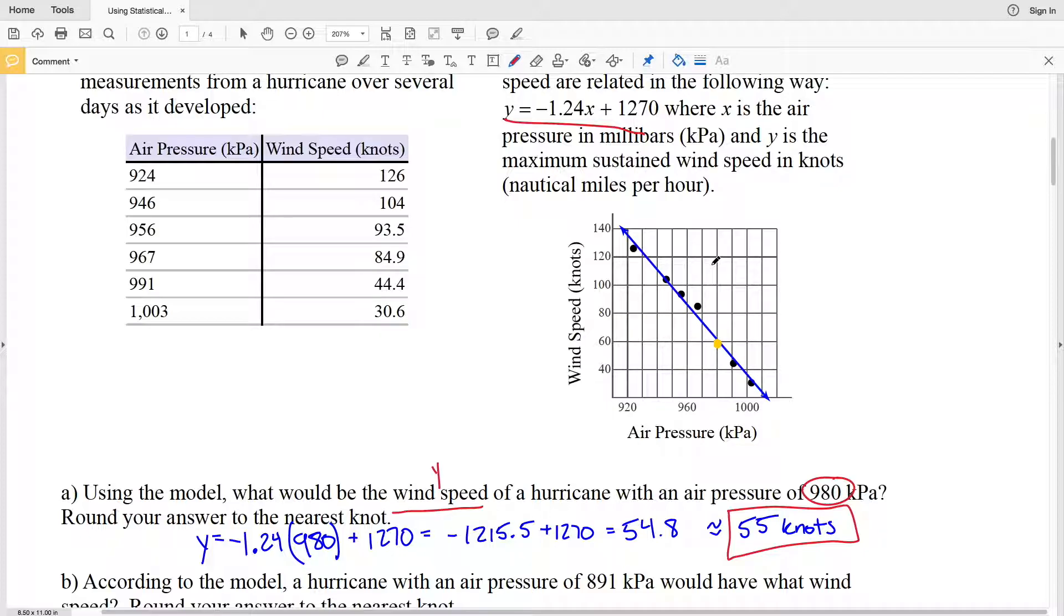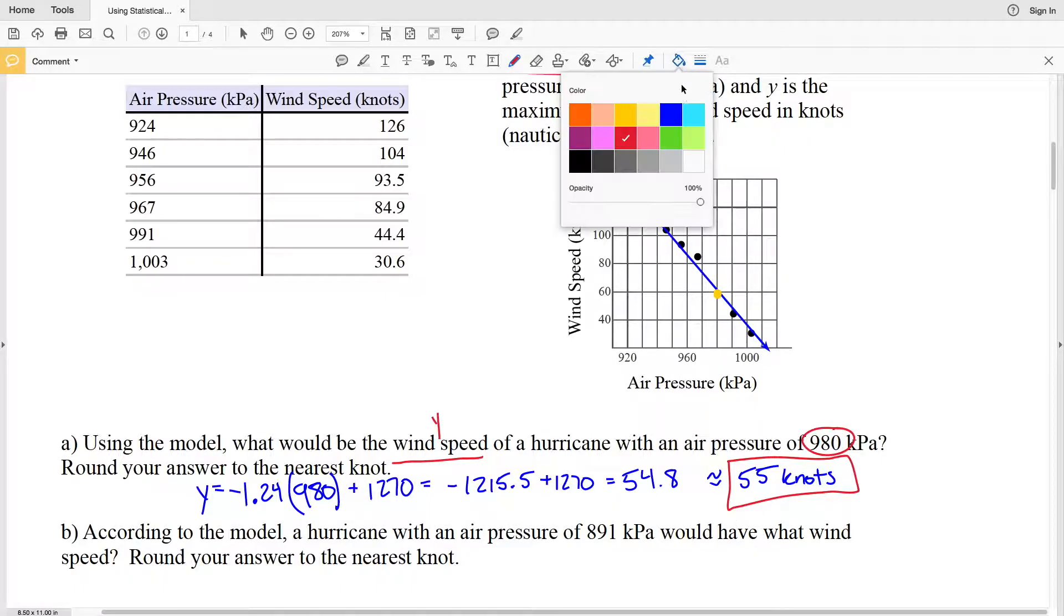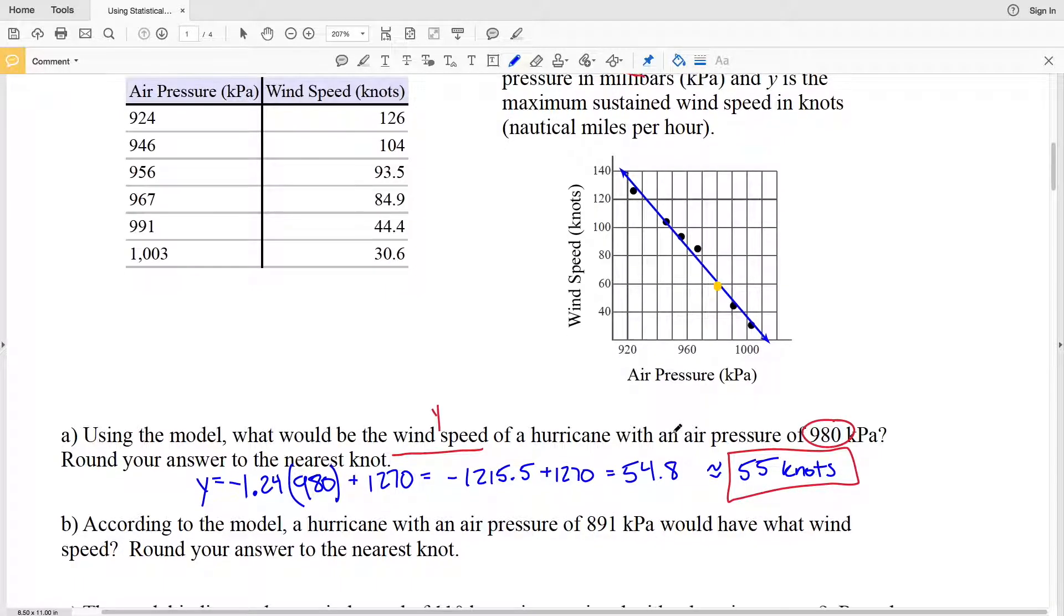In part B, it says according to the model, a hurricane with an air pressure of 891, so that's an X value of 891, would have what wind speed? Again, we're going to use our line of best fit, plugging in 891 for X in part B.